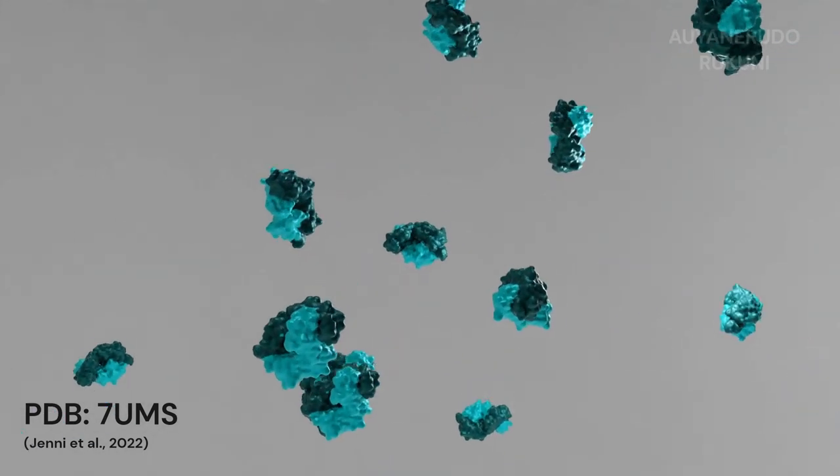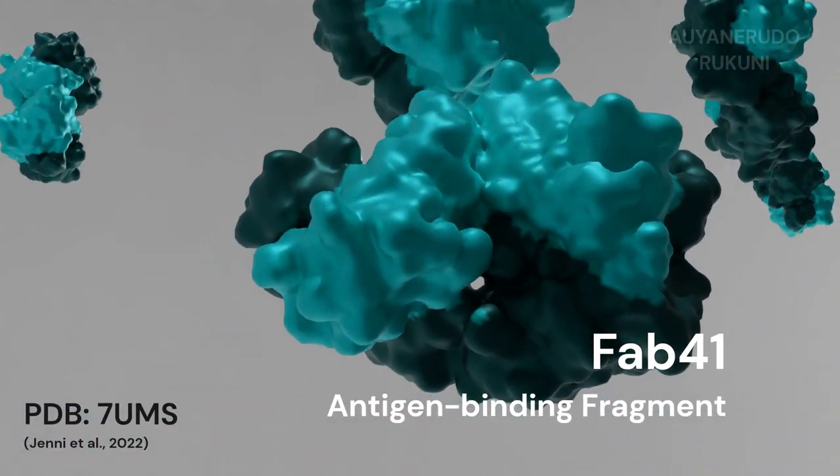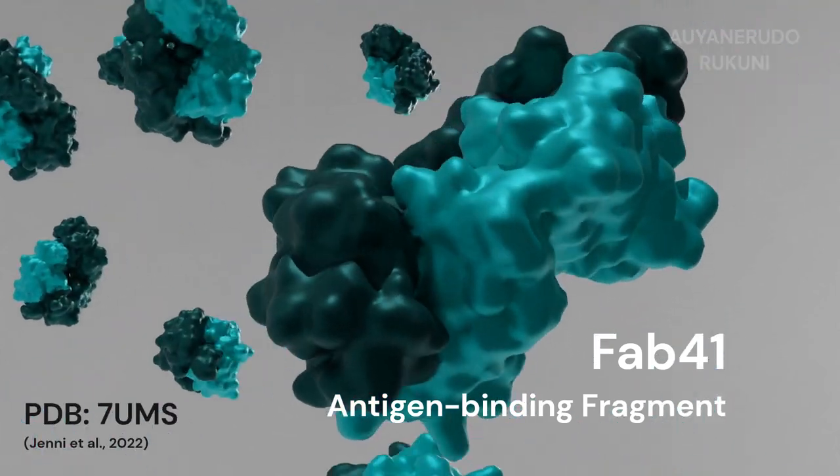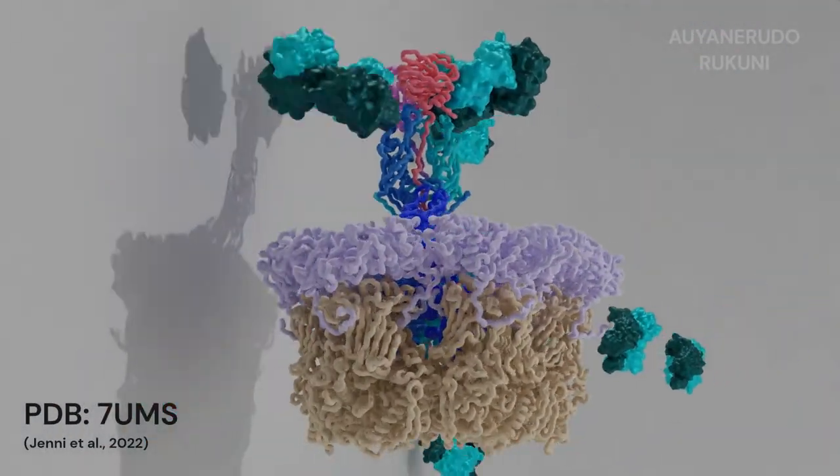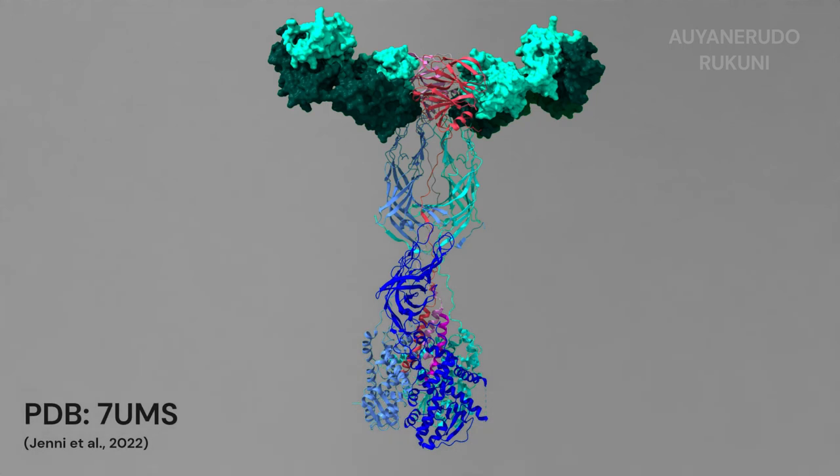An example is the antigen-binding fragment FAB41, which locks the spike in its upright conformation, inhibiting penetration. A footprint of the antibody contacts has been mapped onto VP4 to show its critical binding regions.